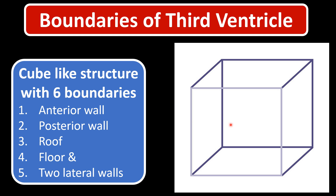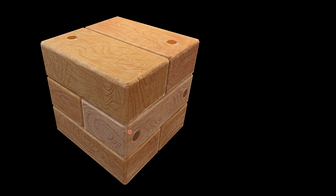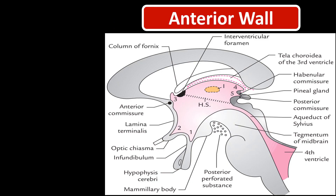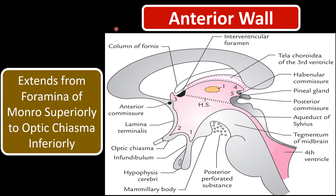The cube shape has six boundaries. The anterior wall extends from the foramen of Monroe superiorly to the optic chiasma inferiorly. The superior boundary is the interventricular foramen of Monroe and inferiorly we can identify the optic chiasma. The structures at the anterior wall are: interventricular foramen of Monroe, columns of the fornix, anterior commissure, and lamina terminalis.